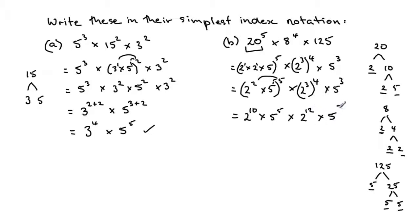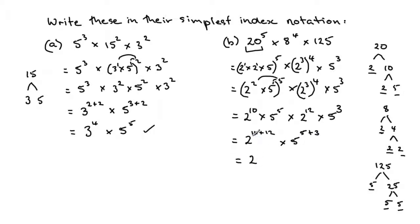Finally, we collect our bases. We have 2 to the 10 and another base of 2 to the 12, so 2 to the 10 plus 12. For base 5, we add the indices: 5 plus 3. The final answer is 2 to the power of 22 times 5 to the power of 8, and that is the simplest way to write that expression in index notation.